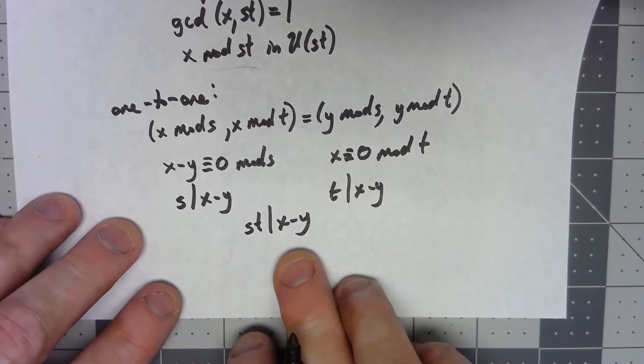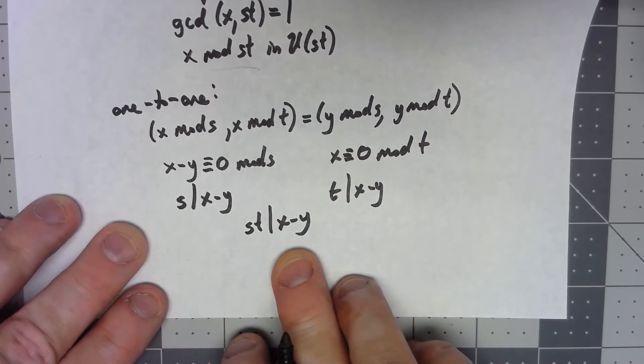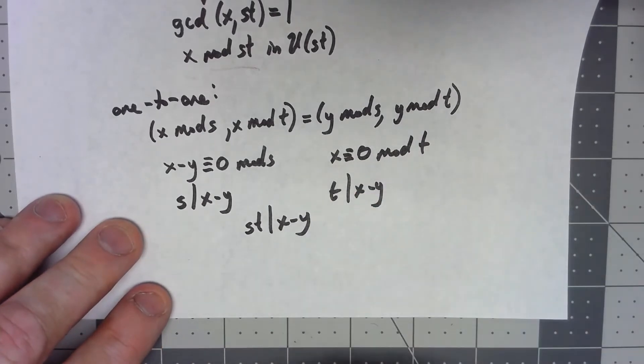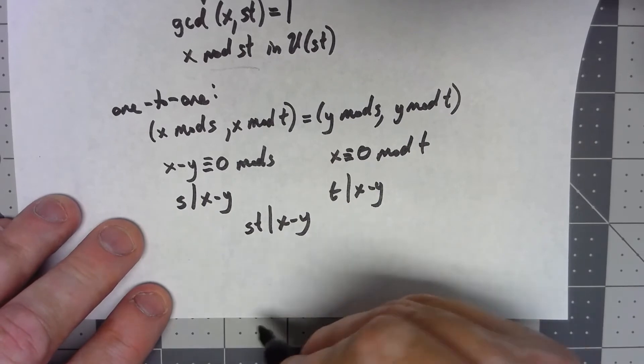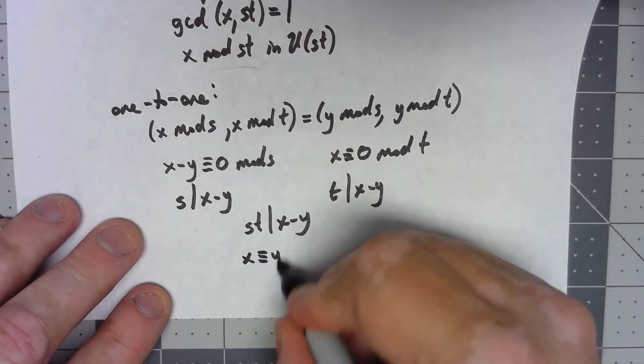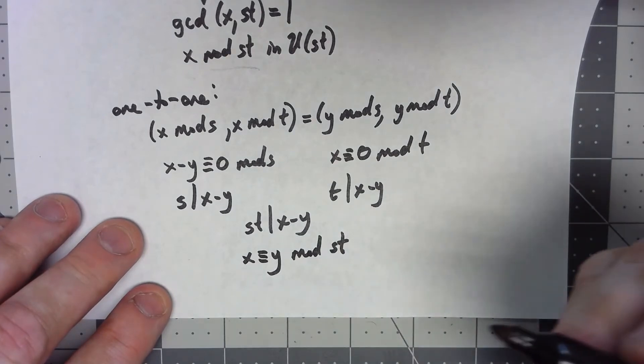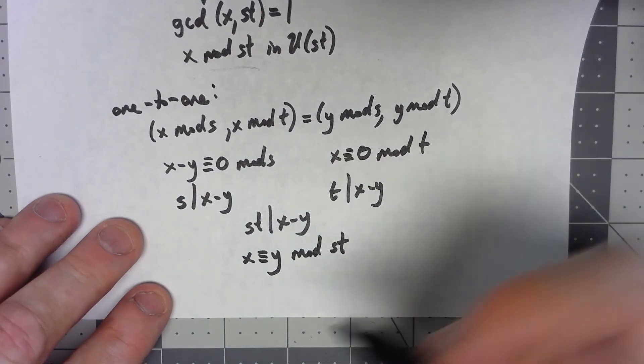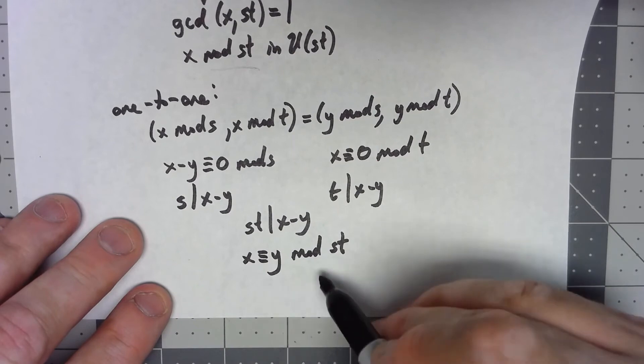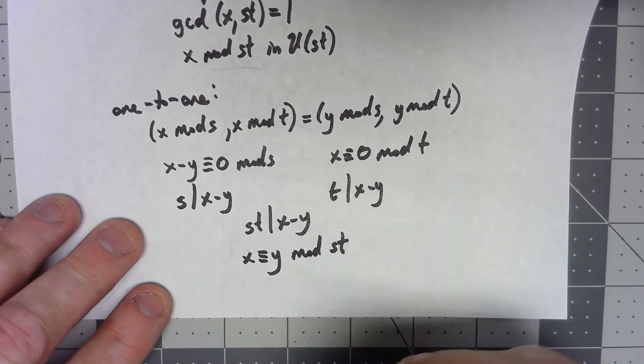But then we, there we have it. If st divides x minus y, then that means that x has to be congruent to y mod st, which means that they're the same elements of U(st).